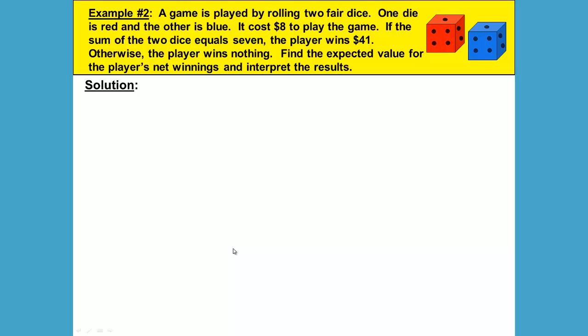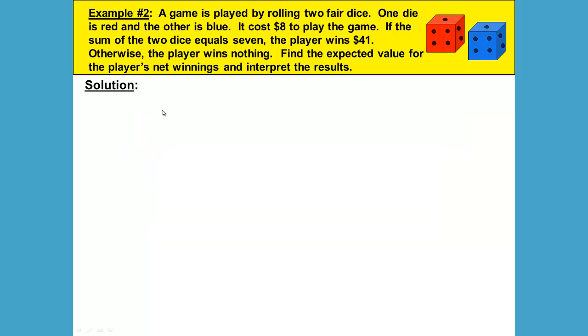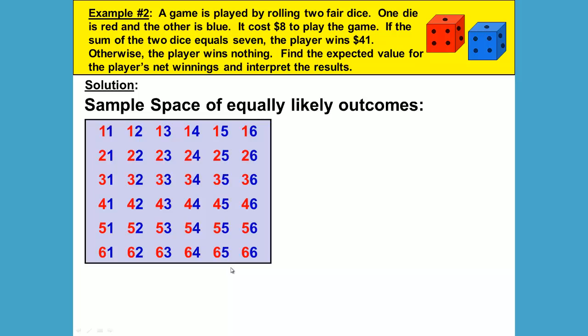First we need to think about what our sample space looks like. When we roll a pair of dice, we get a number from one to six on the red die and a number from one to six on the blue die. Our sample space would look like something like this. Each of these 36 different outcomes would be equally likely.